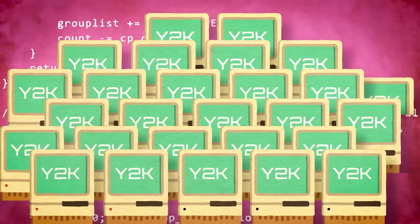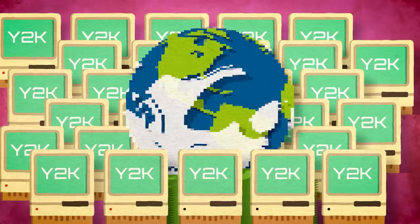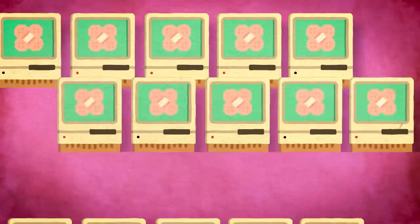Fixing the Y2K bug would require the cooperation of corporations, governments, and institutions from around the globe. It would take a painstaking amount of effort to fix or replace every single piece of faulty software. It would cost billions. And they only had seven years to do it.